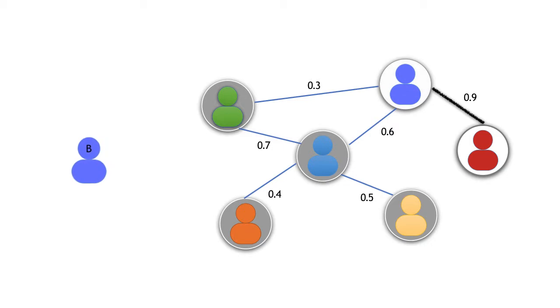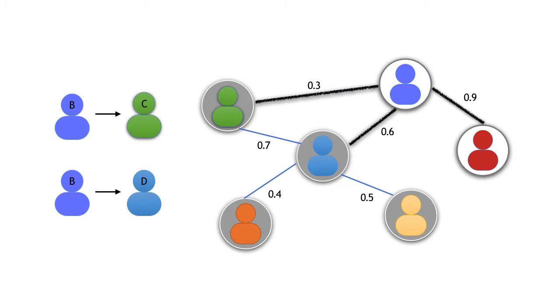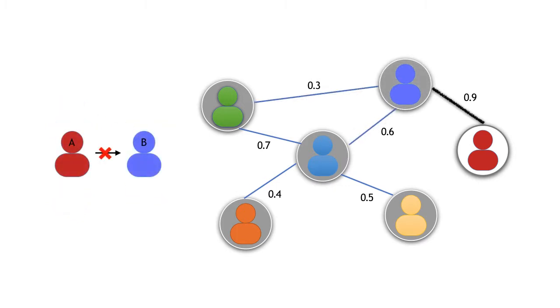If node B is activated by node A, it will try to activate its inactive neighbors such as node C and D. In the single round model, node A only has one chance to activate node B.